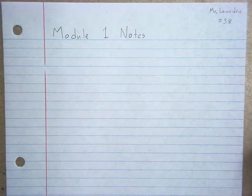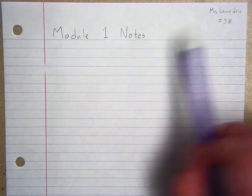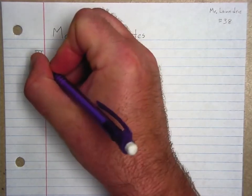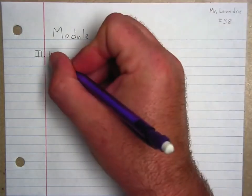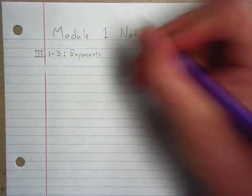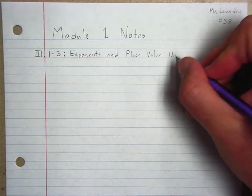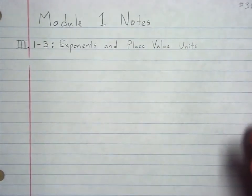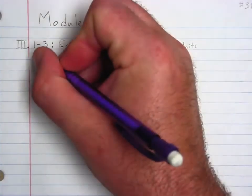All right ladies and gentlemen, we're going to begin with our next page of notes. This is still Module 1, so please write 'Module 1 Notes' at the top, your name and number in the corner. We are going to put Roman numeral 3 because this will be Lesson 3. Today we're going to focus on exponents and place value units, specifically the powers of 10 that we've been working with — we'll talk about how we can write them using exponents.